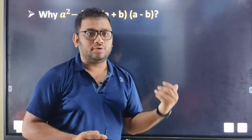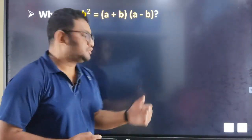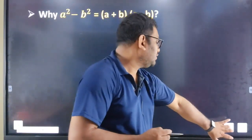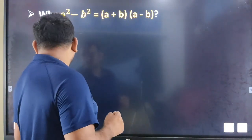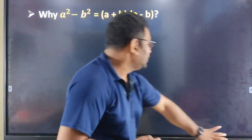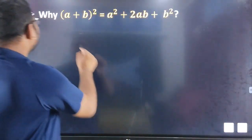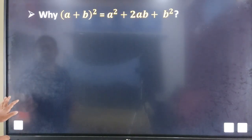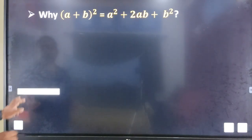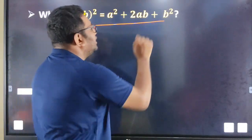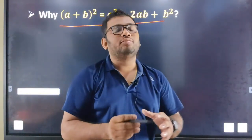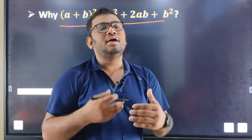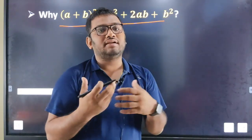This formula is a plus b whole square. This formula is a practical method. Basically, this formula is a plus b plus c.